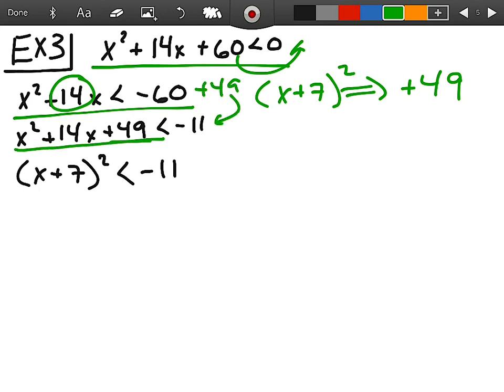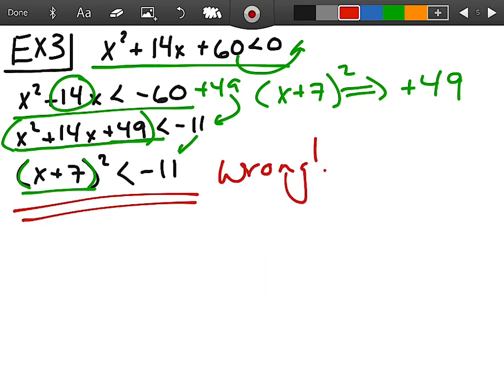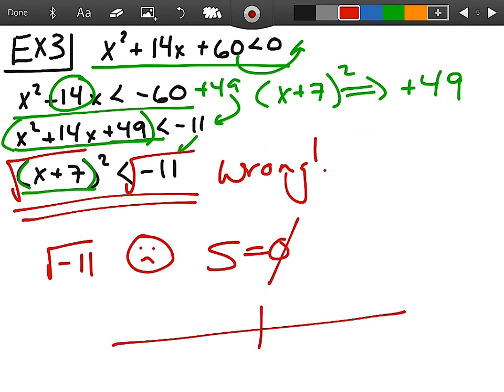I rewrite this trinomial as a squared binomial. And then, bring down my negative 11. And then, suddenly realize that this is wrong. And why is that wrong? It's because your next step would be a square root of both sides. And you cannot take a square root of a negative number. So therefore, your solution is null. And your graph is crickets. Nothing there except a zero.